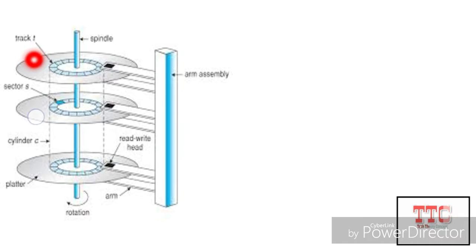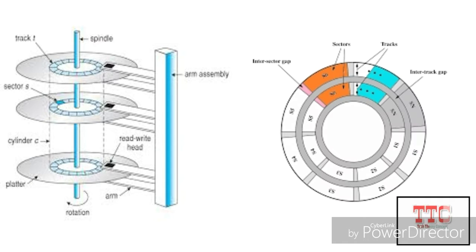In magnetic disks, each disk platter has a flat circular shape, just like a CD. A read and write head is available on each platter and is joined by an arm assembly. Each disk platter is further subdivided into tracks and a track is further subdivided into sectors.